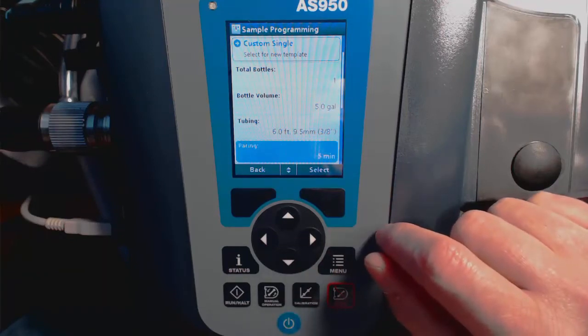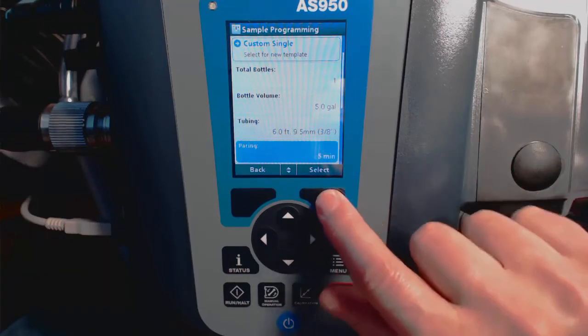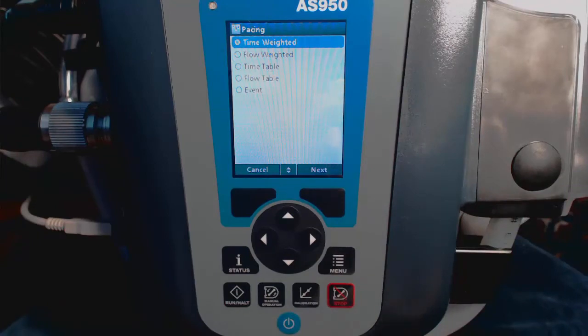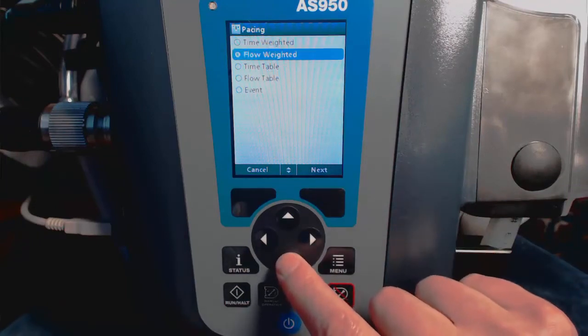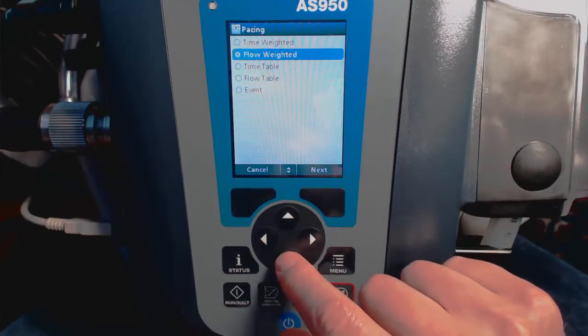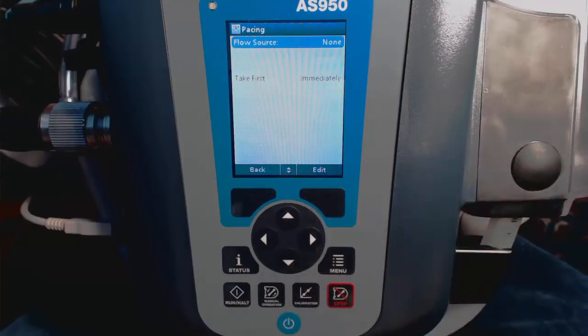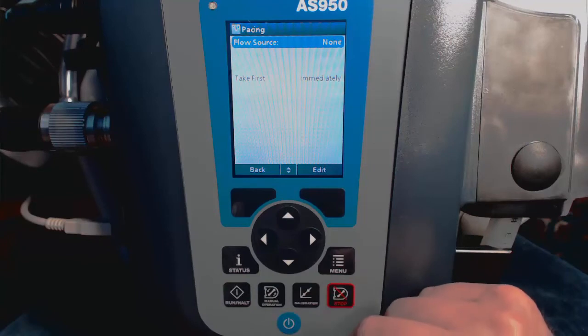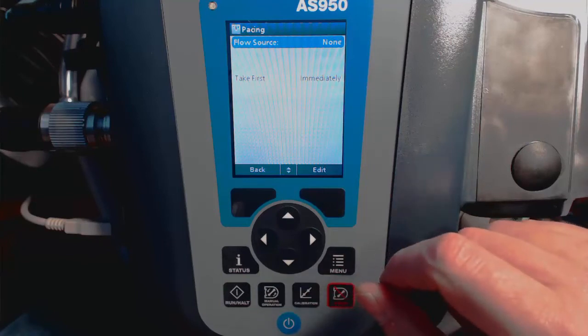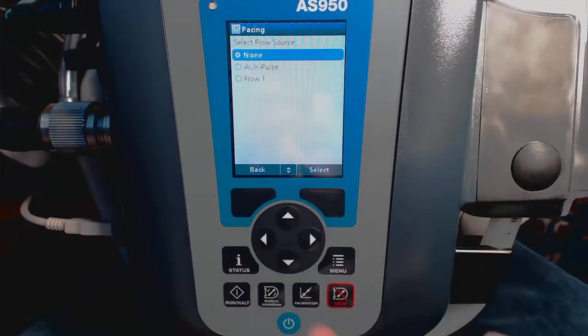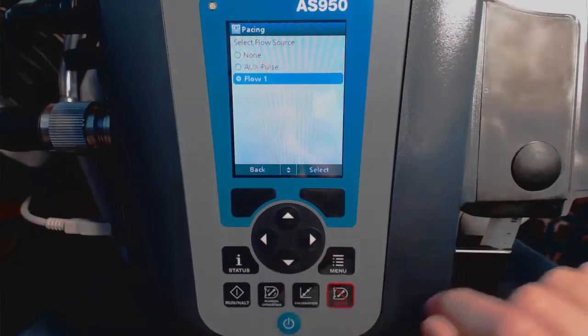And here is the pacing. So we're doing flow proportional, so we want to choose a flow-weighted sample. We choose flow-weighted and press Select. Now we'll need to choose our flow source. In this case, we've set up the AV9000, so we'll select here and choose flow one.